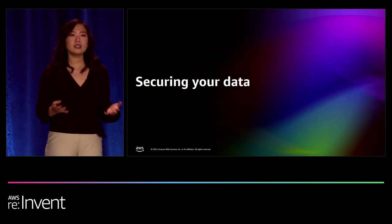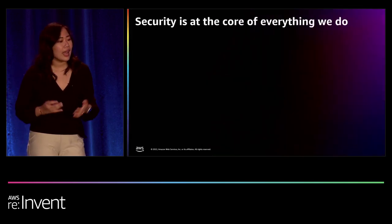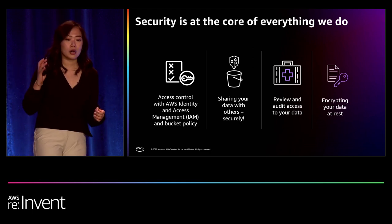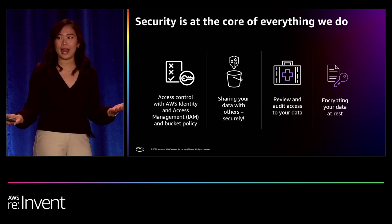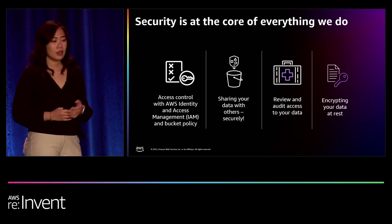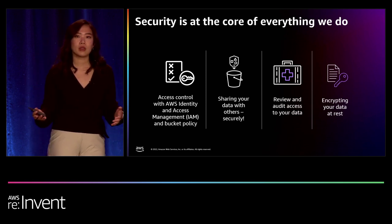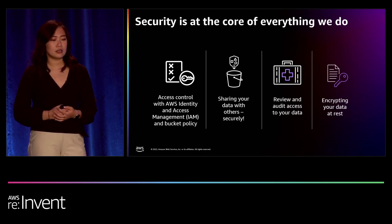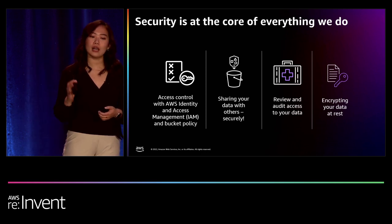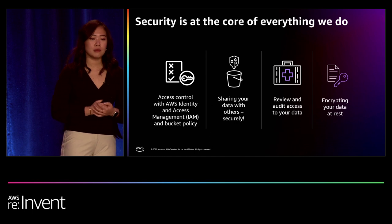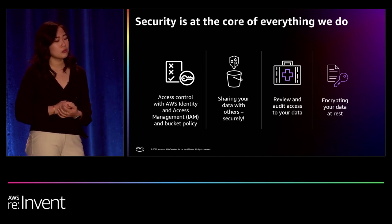Here's our last topic: how to secure your data in S3. At AWS, security is at the core of everything we do. The objects and buckets you store in S3 are secure by default, and we give you granular controls to share that access with others. We'll cover two types of policies for access controls on your buckets — IAM policy and bucket policy — then how to share data within your account or across accounts securely, how to review and audit access controls, and server-side encryption options.